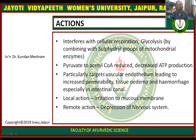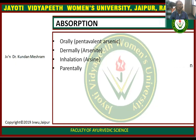Regarding the action of arsenic: it interferes with cellular respiration and glycolysis by combining with sulfhydryl groups of mitochondrial enzymes. It reduces acetyl coenzyme A, leading to decreased ATP production. It also particularly targets vascular endothelium, leading to increased permeability, tissue edema, and hemorrhage especially in intestinal mucosa. Local action includes irritation to mucous membranes; remote action includes depression of the nervous system. It is absorbed orally as pentavalent arsenic, dermally as arsenite, and by inhalation as arsenic gas, and can also be absorbed parenterally.